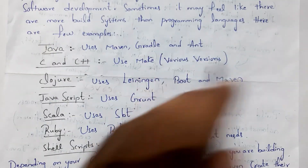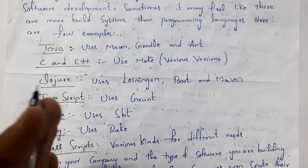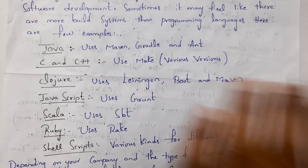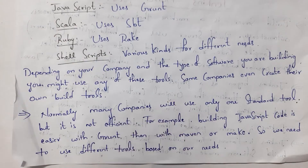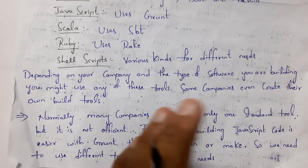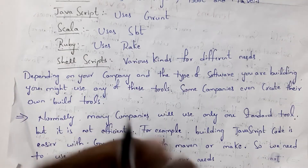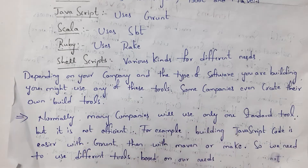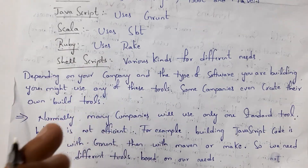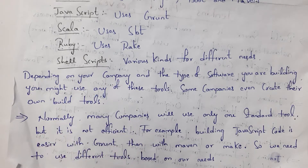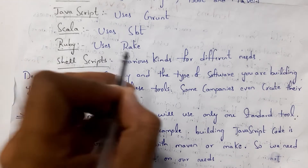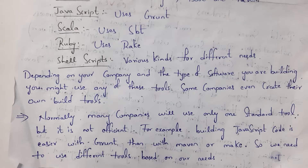All these are build systems — that is, softwares by which we can compile, test, and package code to create an executable file. Depending on your company and type of software you are creating, you need to choose the appropriate build system. Some companies create their own build software. Many companies use only one build system for all projects, but that is not right. For example, Maven is suitable only for Java projects; it is not suitable for Ruby or JavaScript projects. For JavaScript, Grunt is best, and for Ruby, Rake is best. So based on your project, you should choose different build systems.